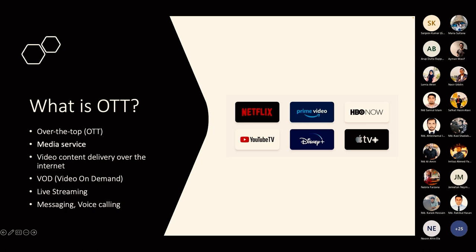We all know there are some popular OTT platforms like Netflix, Amazon Prime, Disney Plus, and Indian OTT platforms like GPlay, Bioscope, Hoichoi, and others. Lots of popular OTT platforms are available in our country as well as worldwide, and it is getting more popular day by day. We need to know how it works technically and how we can build it on AWS.